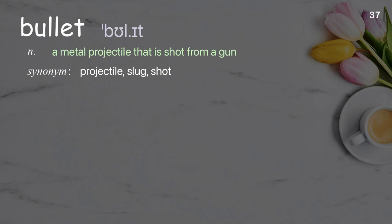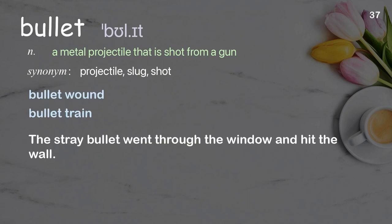Bullet. A metal projectile that is shot from a gun. Examples: bullet wound, bullet train. The stray bullet went through the window and hit the wall.